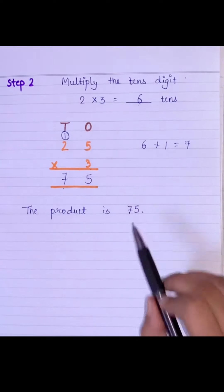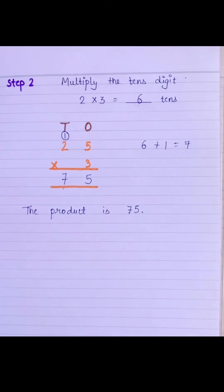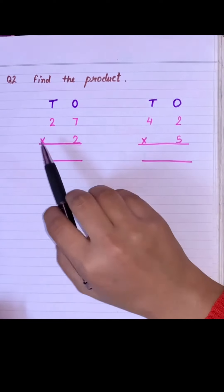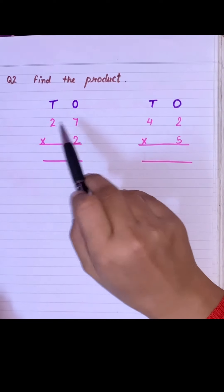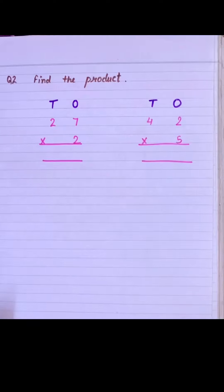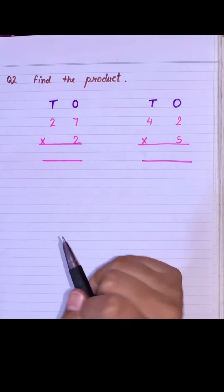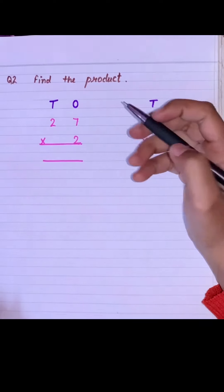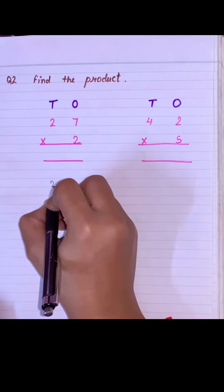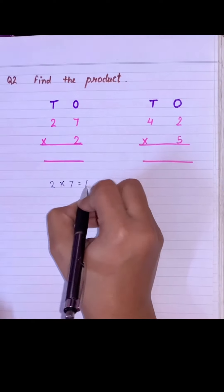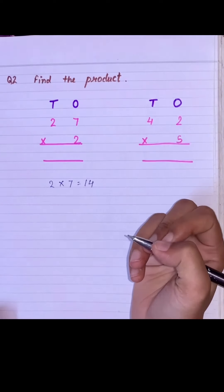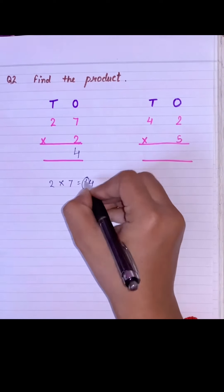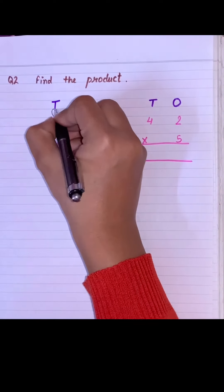Students, let's take a few more examples. I have taken the question 27 multiplied by 2. The first step will be to multiply the ones with 2, so 2 multiply by 7 will be 14. We will write 4 under the ones place and this 1 will go here as carry over.